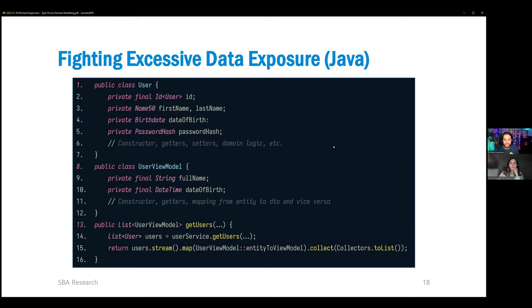Applying the reverse then solves the problem with mass assignment, the other OWASP category. You explicitly create DTOs for input data with only the fields that clients are supposed to modify and later convert them to your domain types.